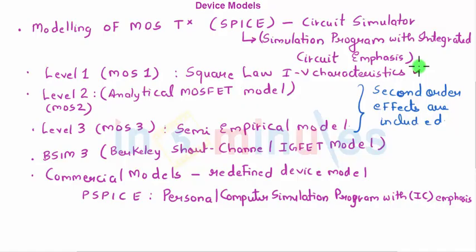Level 2 is an analytical MOSFET model also called as MOS 2 model. This will take into consideration your second order effects so would level 3 which is a semi-empirical model. Here we are not getting into the details of each of these models. The idea here is to understand the basics of level 1 and level 2.